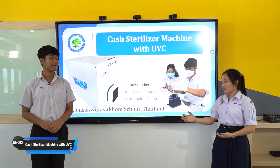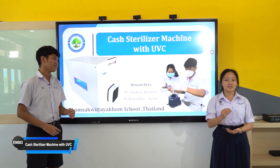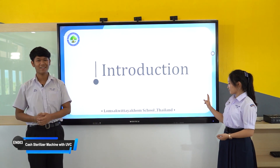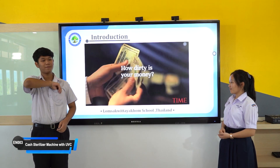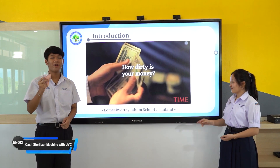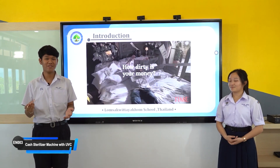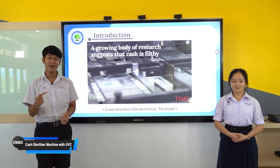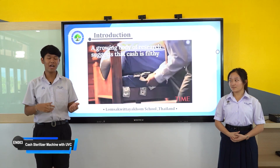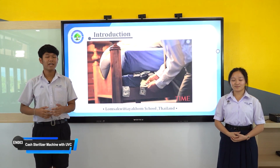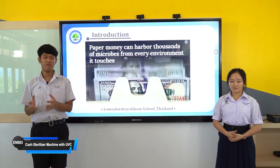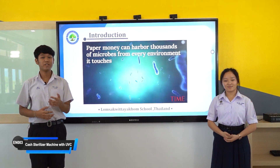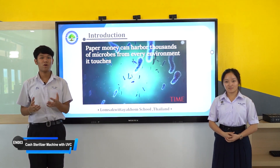Firstly, my partner would like to give you some background. We have to know about the introduction. Money is one of the objects that humans want to touch and possess the most. It can be used for exchanging, trading, and spending to buy things. It circulates between payer and receiver. Therefore, it is mostly likely a carrier of disease-causing microorganisms. Studies show that banknotes and coins are contaminated with bacteria, which can be the cause of diseases.